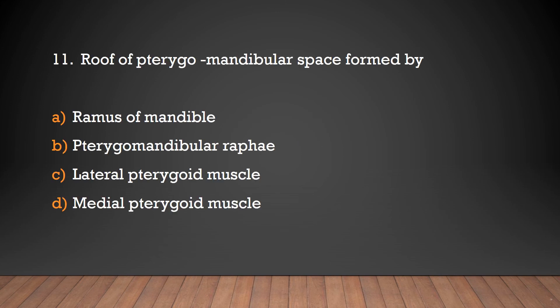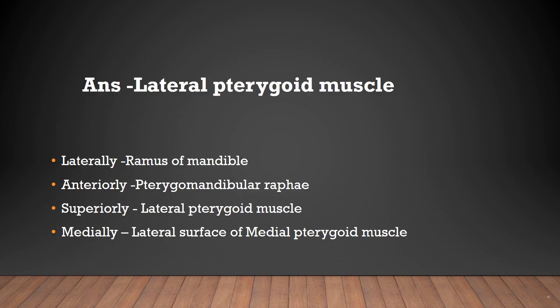The roof of the pterygomandibular space is formed by: ramus of mandible, pterygomandibular raphe, or lateral pterygoid muscle? The answer is lateral pterygoid muscle. The boundaries are: laterally — ramus of mandible; anteriorly — pterygomandibular raphe; superiorly — lateral pterygoid muscle; medially — lateral surface of medial pterygoid muscle.